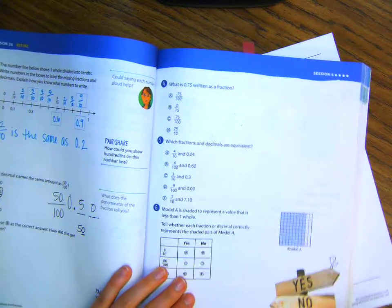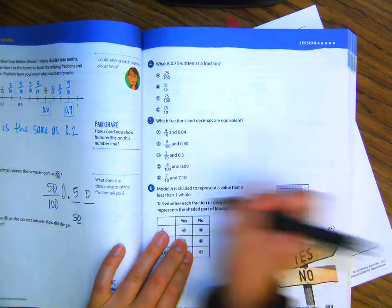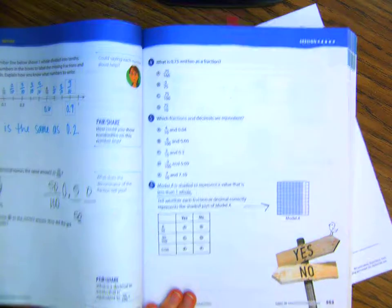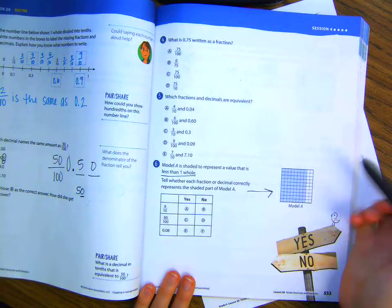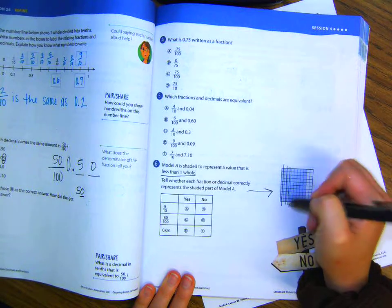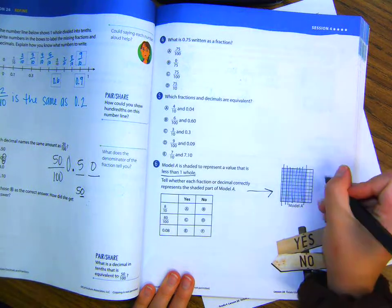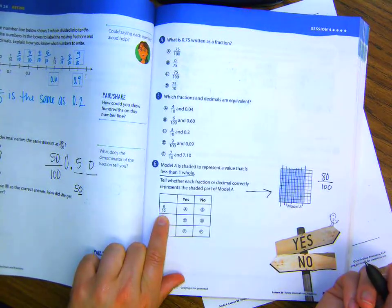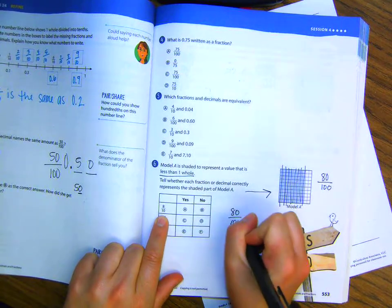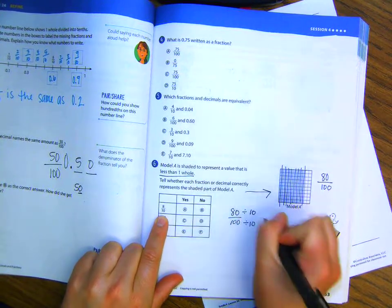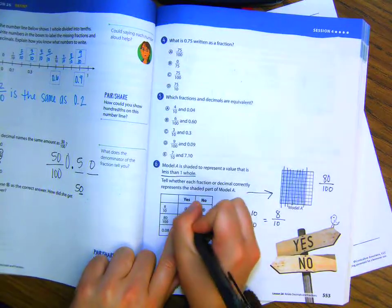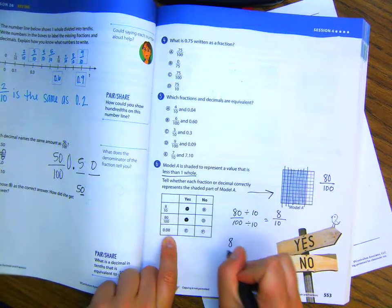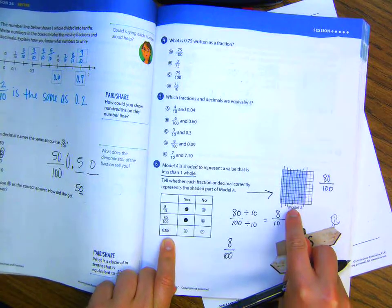Number six on page 553. Model A is shaded to represent a value that is less than one whole. Tell whether each fraction or decimal correctly represents what's going on here in model A. So, do we see eight-tenths here? So, one, two, three, four, five, six, seven, eight. But, I know that this is hundredths. So, that's eighty-hundredths. If I wanted to reduce that or simplify it to eight-tenths, I would divide by ten to bottom and top. And, I would get eight-tenths. So, yes, that's true. Eighty-hundredths is true as well. But, this right here is eight-hundredths. And, there aren't eight boxes shaded in. There's eighty. So, this one's a no.